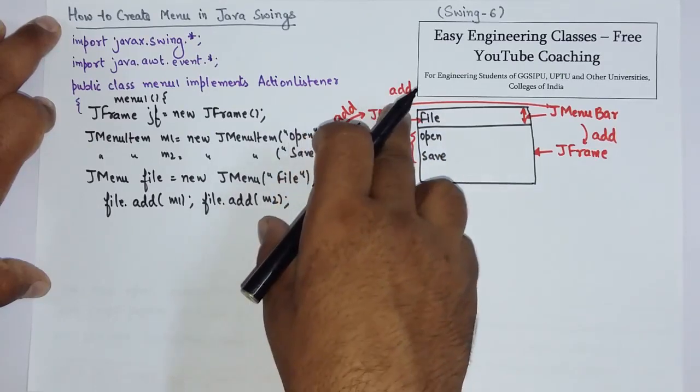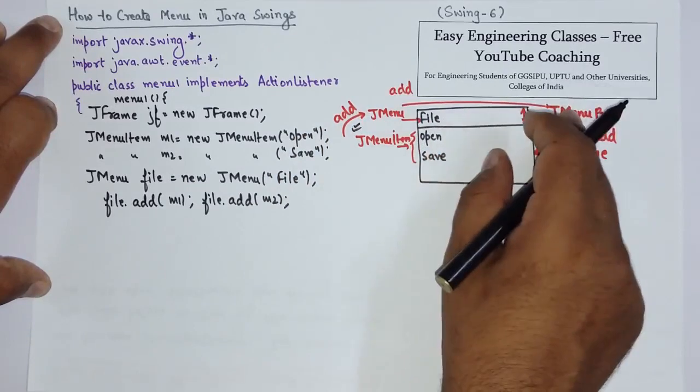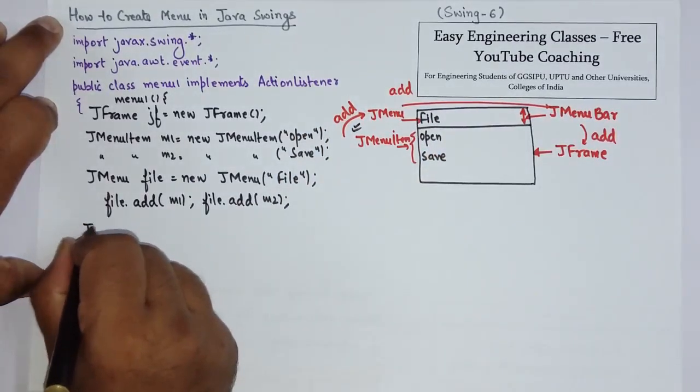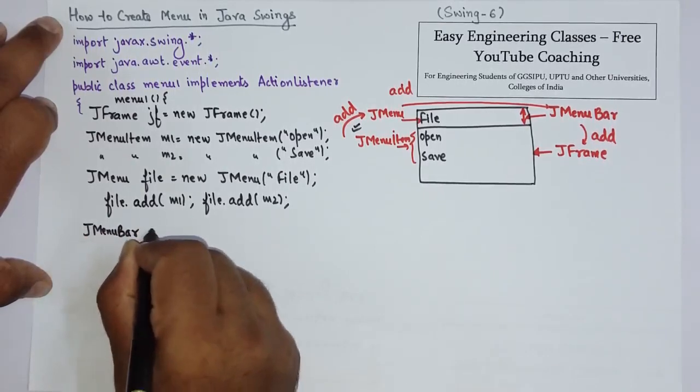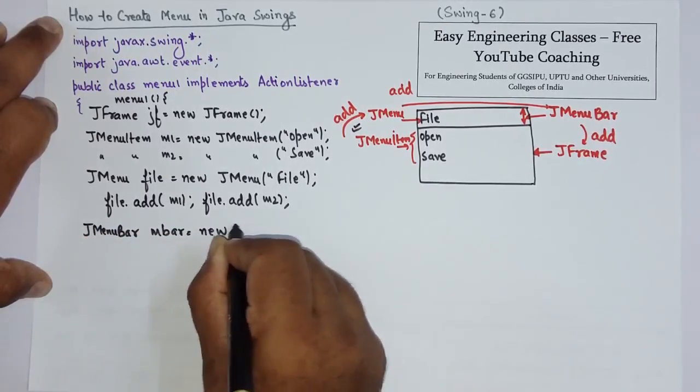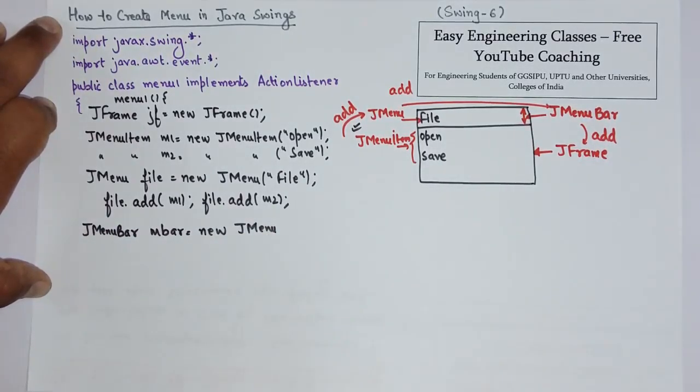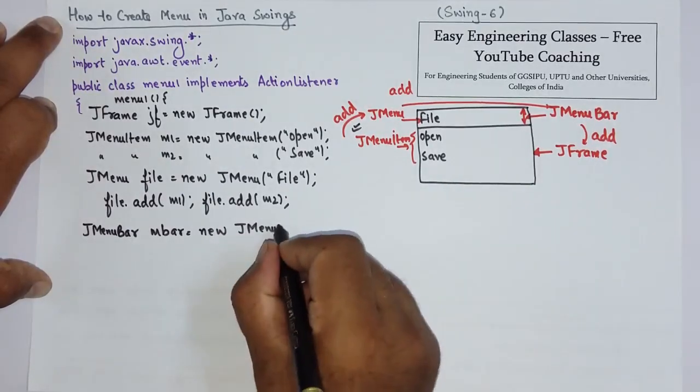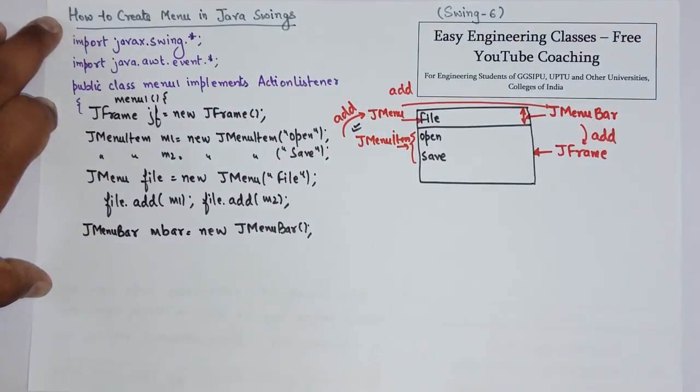And I have also added menu items to the menu. Now I have to add this menu in the menu bar. To create a menu bar object, JMenuBar mbar equals new JMenuBar.